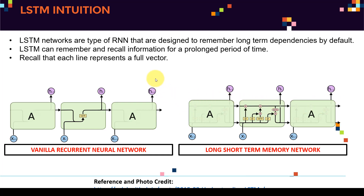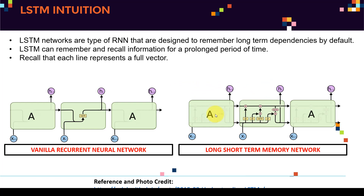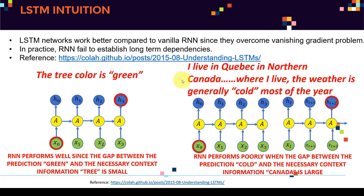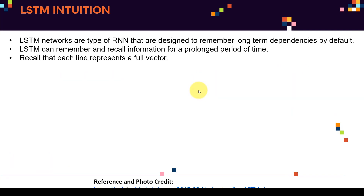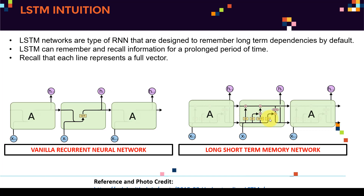The most important characteristic of the LSTM is this horizontal line — called the memory or cell state. This cell state enables the LSTM to remember very old information. Basically, all the memory from the past is preserved — knowing, for example, that there is 'Quebec' and 'Canada' in the context. That's why LSTM networks are able to overcome the issues of vanilla recurrent neural networks.